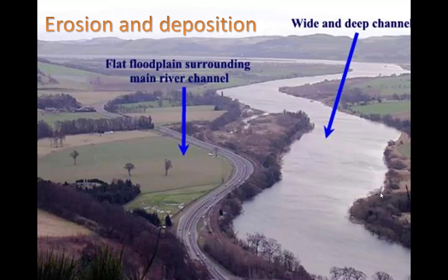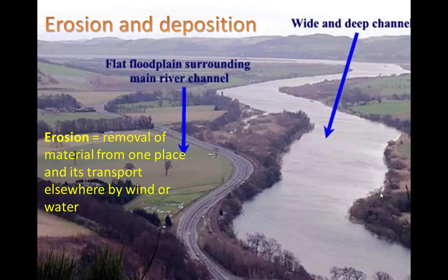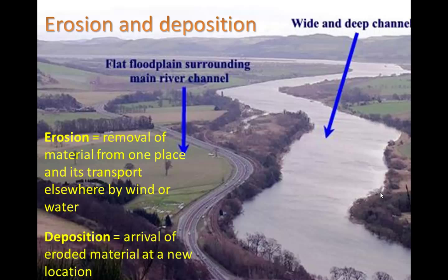First of all, erosion and deposition. We think of erosion as a bad thing. We can define it as the removal of material from one place and its transport elsewhere by wind or water. But actually there's some real ecological importance to this, because erosion from one area can bring with it nutrient-rich soil to another area. When that soil is deposited, we call it deposition — the arrival of eroded material at a new location.